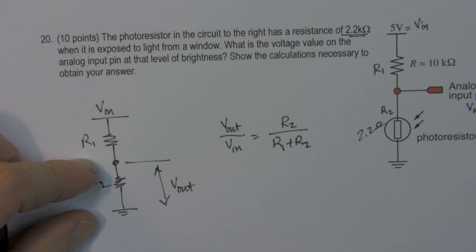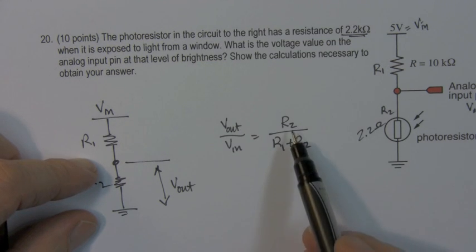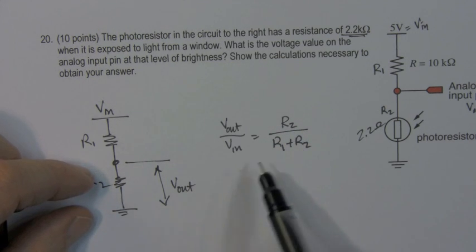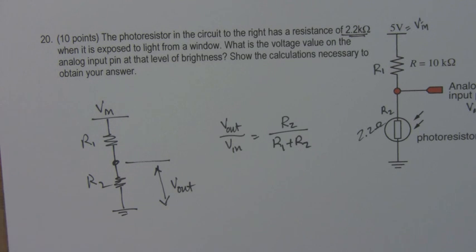I'll derive that in a bit, but we just take this as known. You should know this. The voltage divider output is the resistance of the lower resistor divided by the total resistance. That ratio is VOUT over VIN.